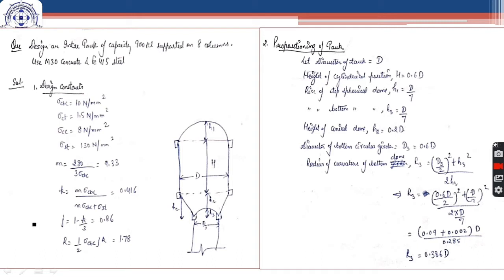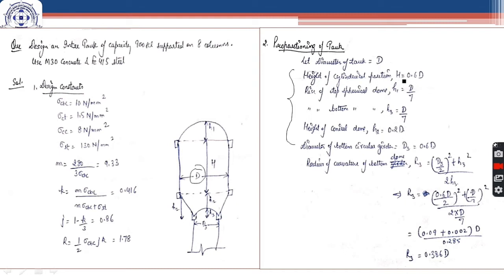After we have calculated all the design constants, we move on to the proportioning of the tank. As explained in the previous lecture, all the proportions or dimensions of the different components of the Intze tank — like h1, h, h2, h3, and d3 — all depend upon the diameter d. In this question, d is not given, so we first have to find the diameter required. We write all the terms h, h1, h3, h2, d3 in terms of d because they all depend on d.